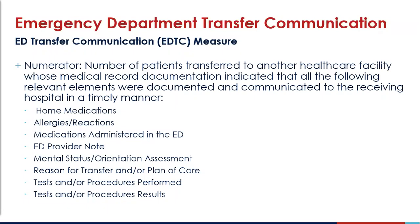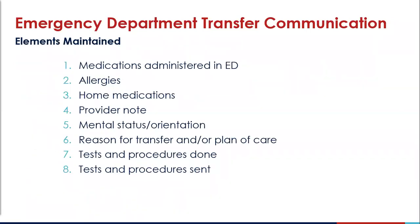EDTC measures fall under the umbrella of care transitions for the MB-CLIP measures in the FLEX program. There is one composite measure and eight elements within the EDTC measures. Ultimately, the goals of the EDTC transfer measures are to assess how well key patient information is being communicated from the emergency department to any healthcare facility. Looking at elements one through four: medications administered in the emergency department, allergies, home medications, and the provider note are considered the key aspects of care coordination. And number five is mental status and orientation.